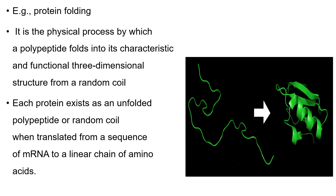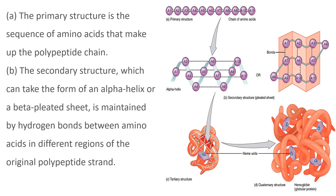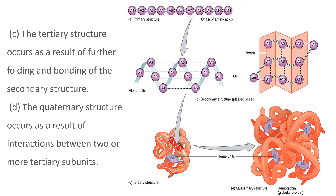An example of molecular folding is protein folding — the physical process by which a polypeptide folds into its characteristic and functional three-dimensional structure from a random coil. Each protein exists as an unfolded polypeptide when translated from mRNA to a linear chain of amino acids. The primary structure is the sequence of amino acids in the polypeptide chain. The secondary structure, which can take the form of an alpha helix or beta pleated sheet, is maintained by hydrogen bonds. The tertiary structure results from further folding and bonding of the secondary structure. The quaternary structure occurs from interactions between two or more tertiary subunits.